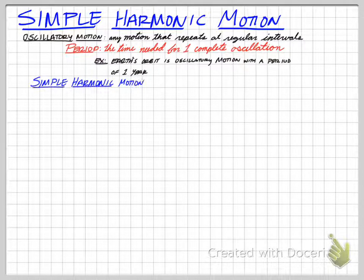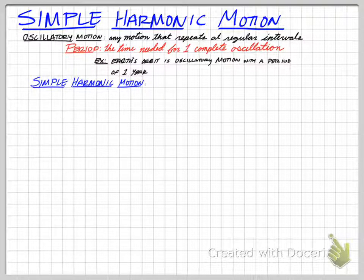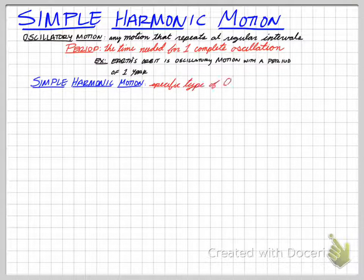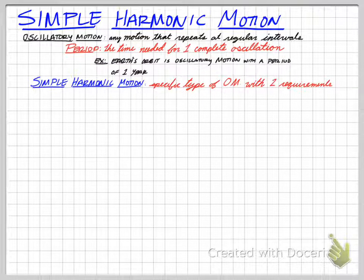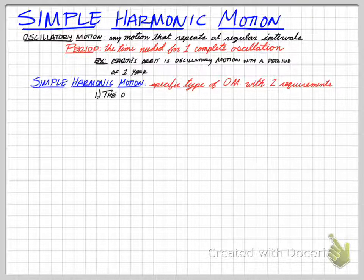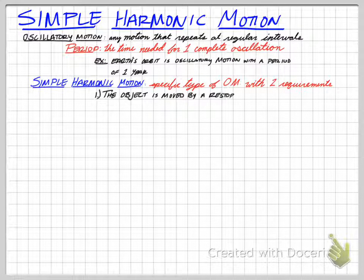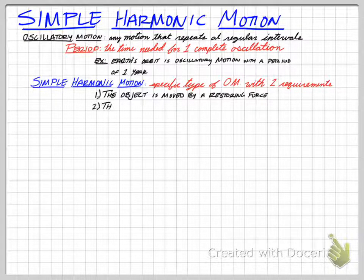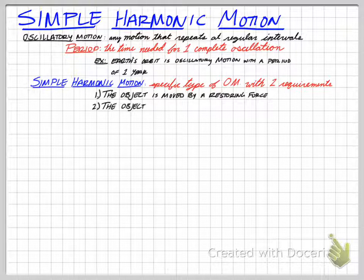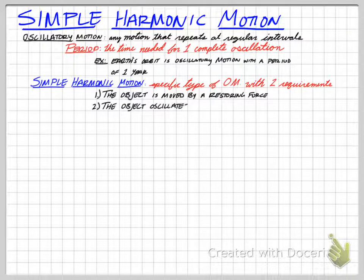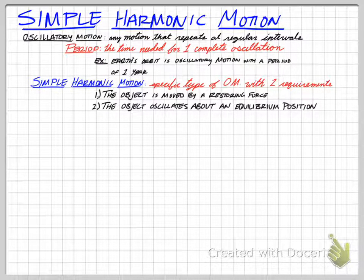Simple harmonic motion is a special type of oscillatory motion. The first requirement is that the object has to move because of something called a restoring force. The second condition is that the object oscillates around an equilibrium position. So it's going around a set position every single time, moving back and forth across it.